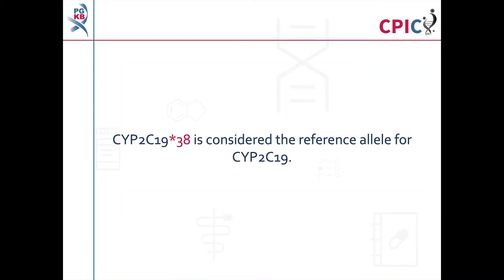It is important to know that the CYP2C19 *38 allele was recently designated as the reference allele for CYP2C19 rather than *1. CYP2C19 *38 matches the RefSeq sequence for CYP2C19, while *1 and many other alleles contain an I331V amino acid change.